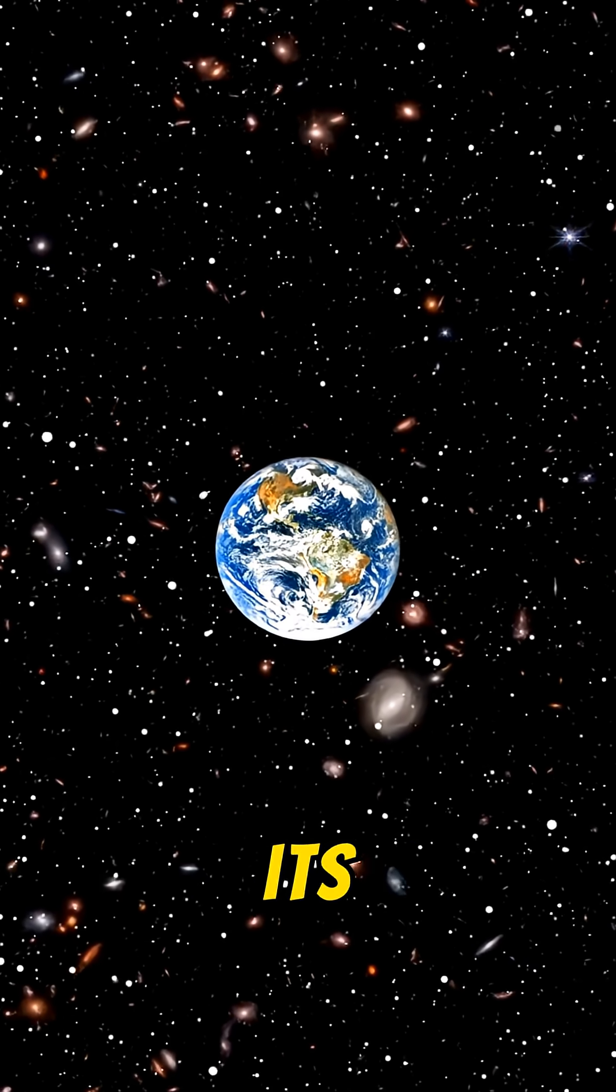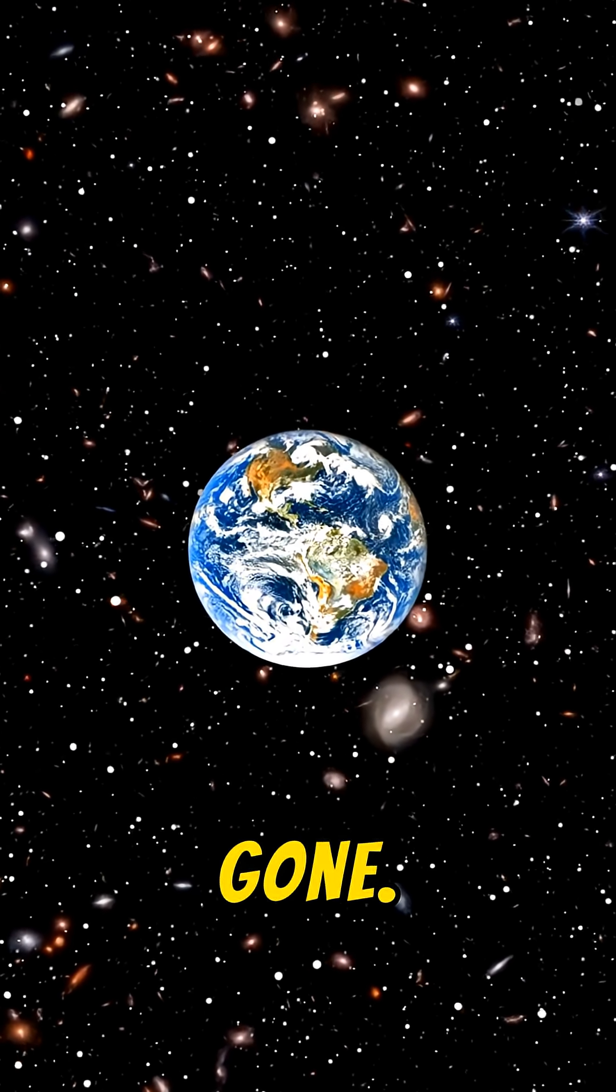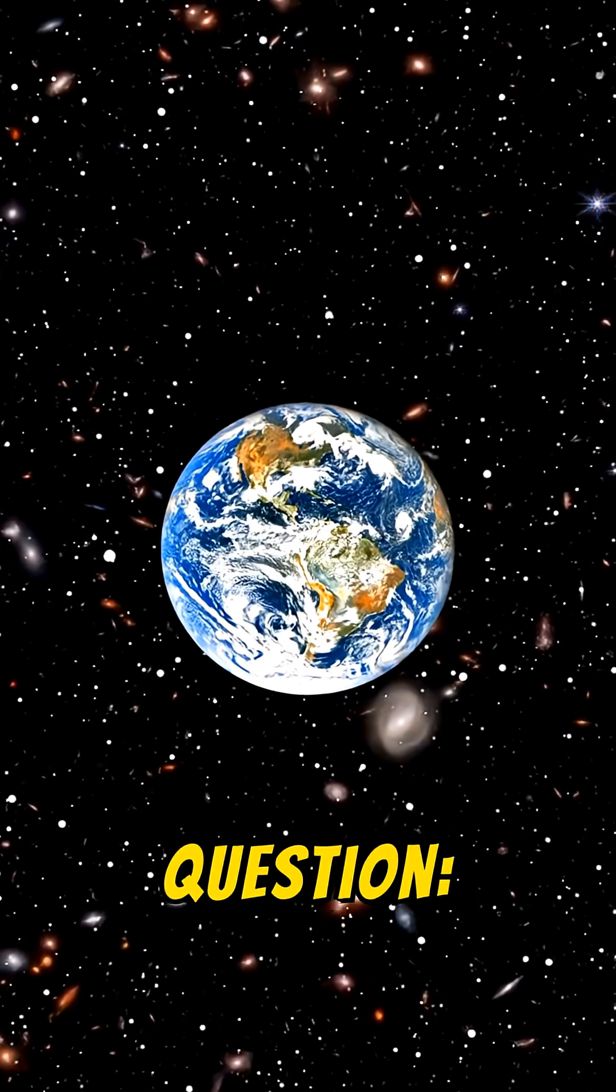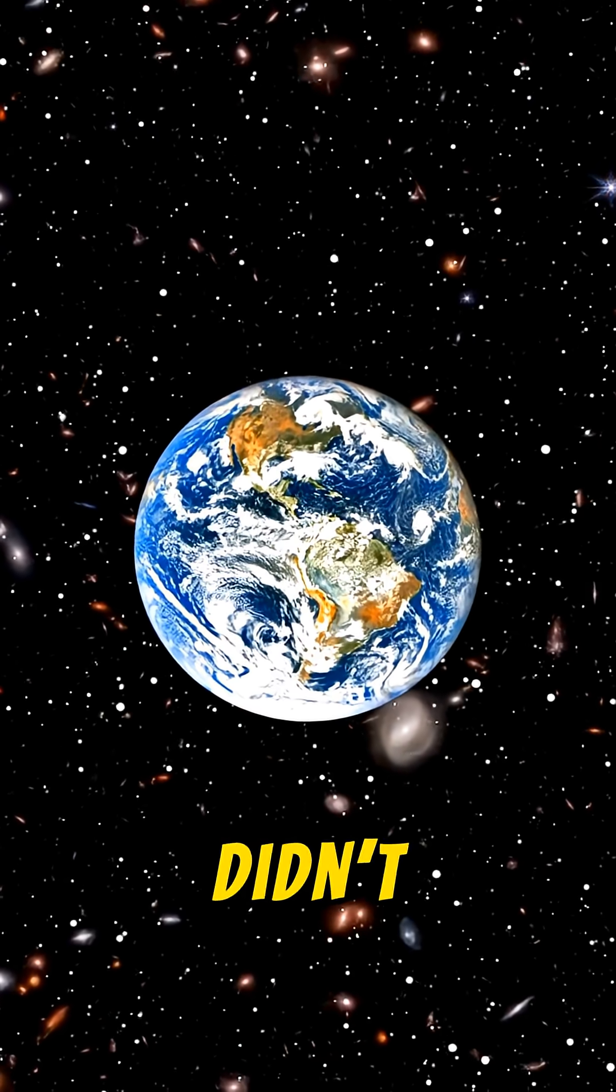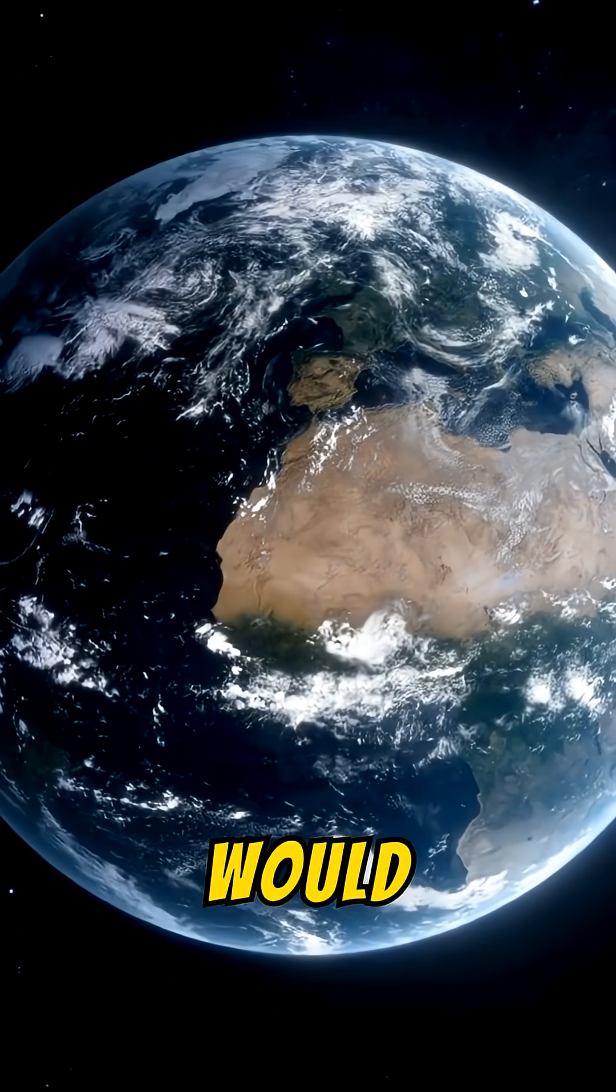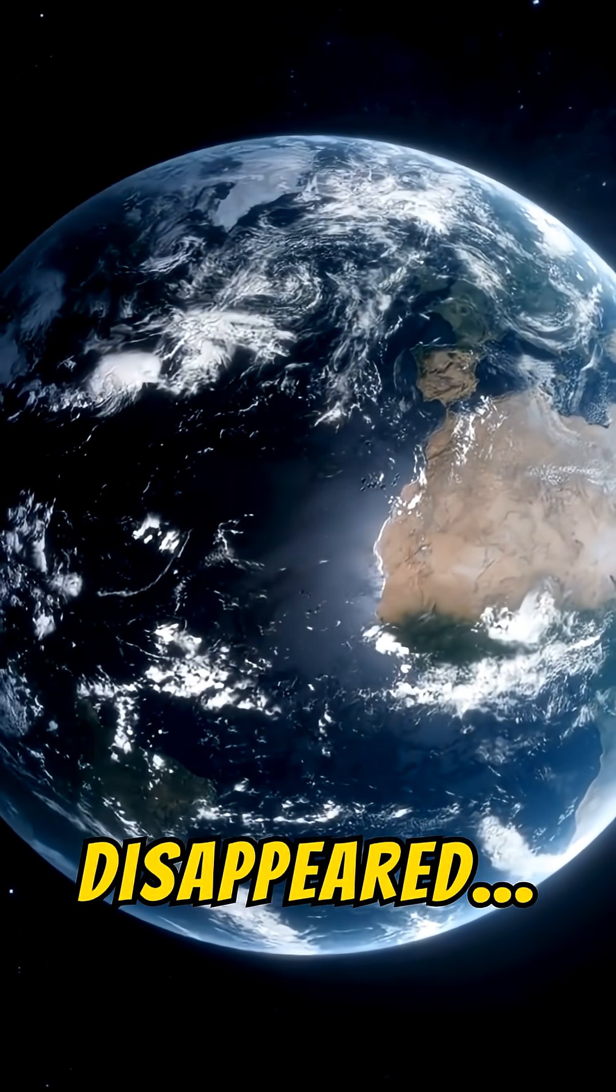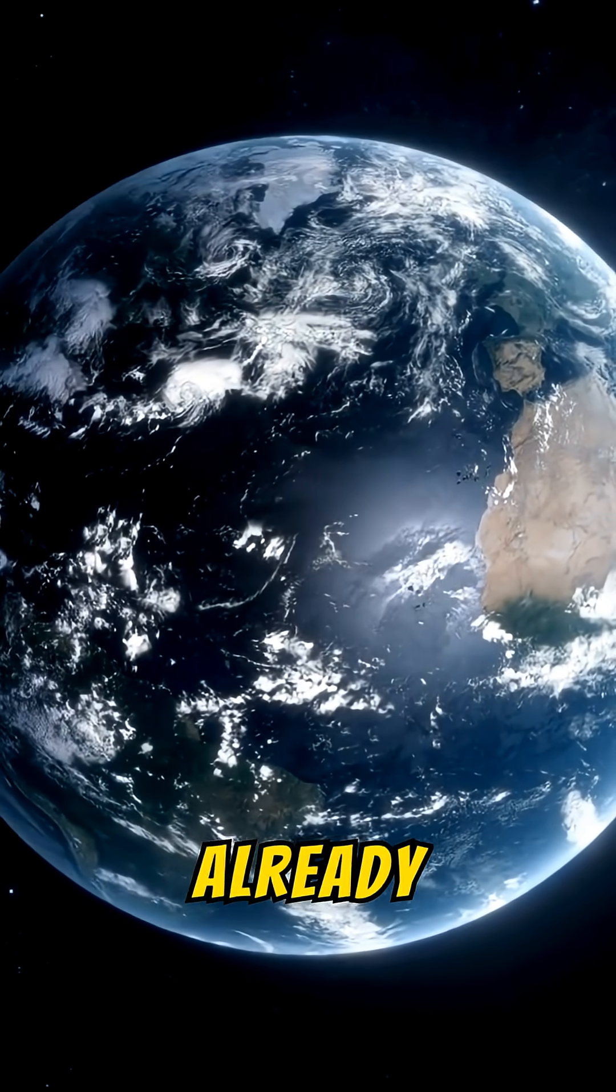The planet would still exist, but its long-term stability would be gone. So here's the real question: If losing the moon didn't destroy Earth instantly, would we notice when its quiet protection finally disappeared? Or only after the damage was already done?